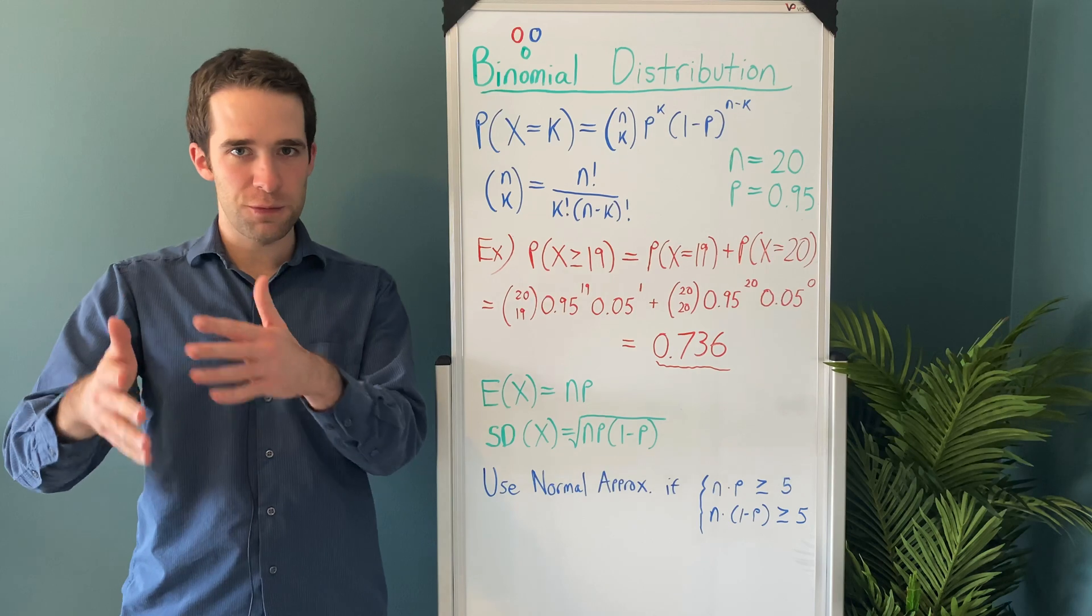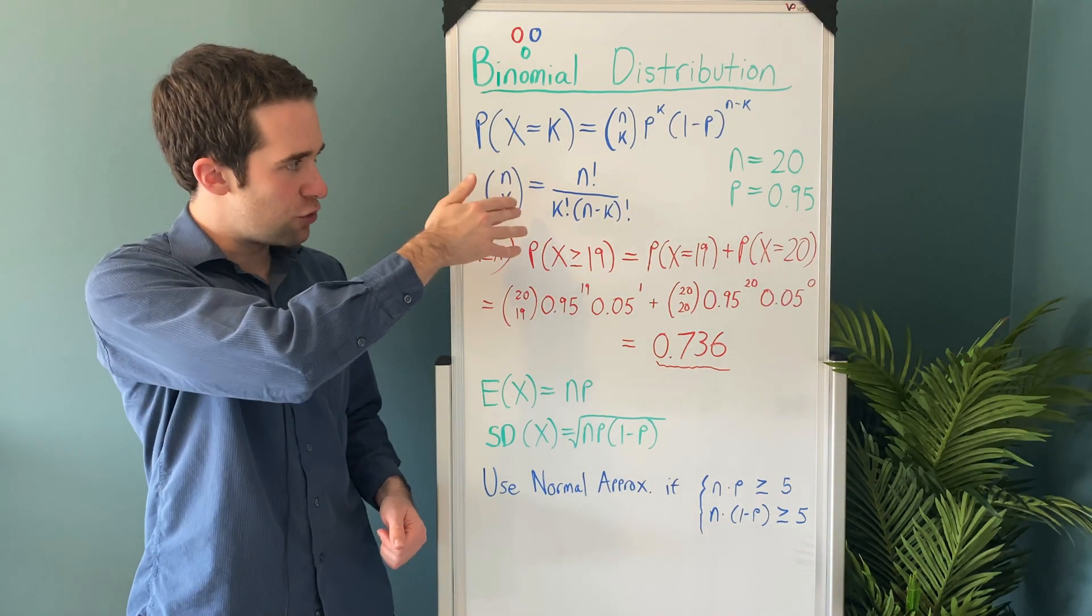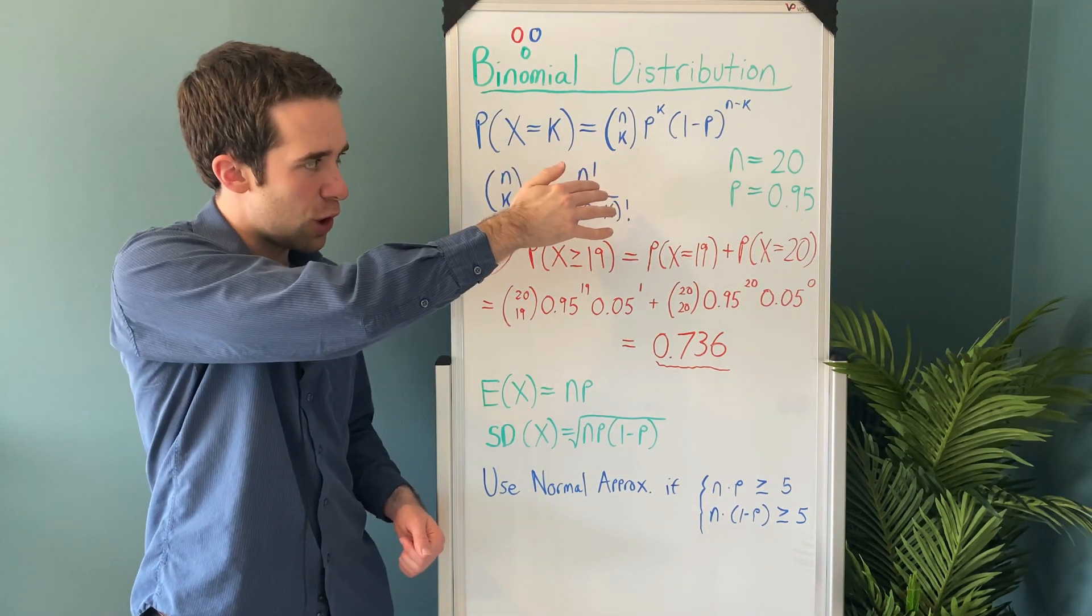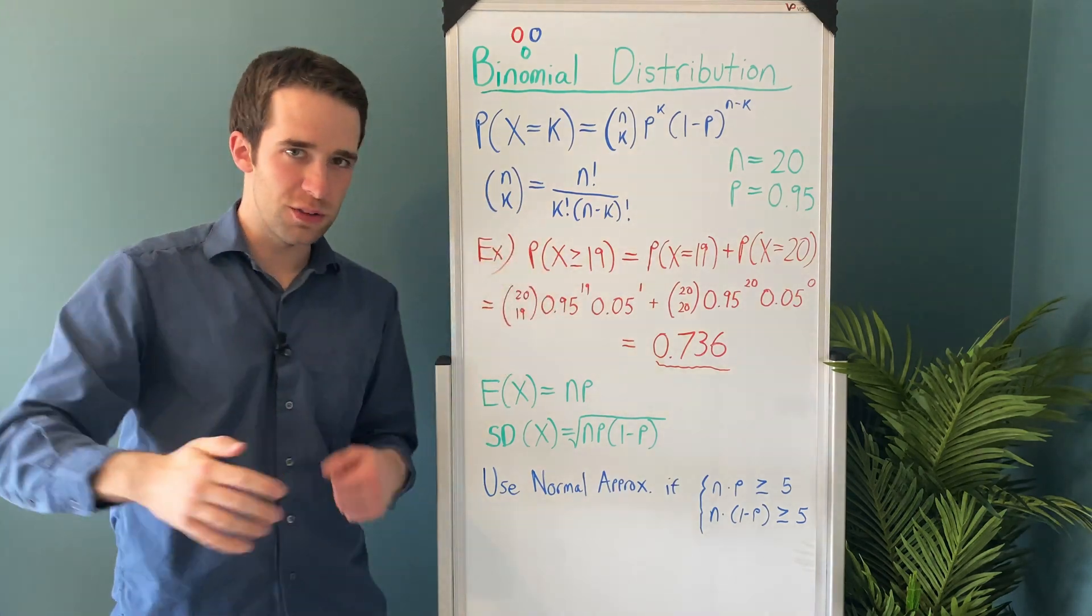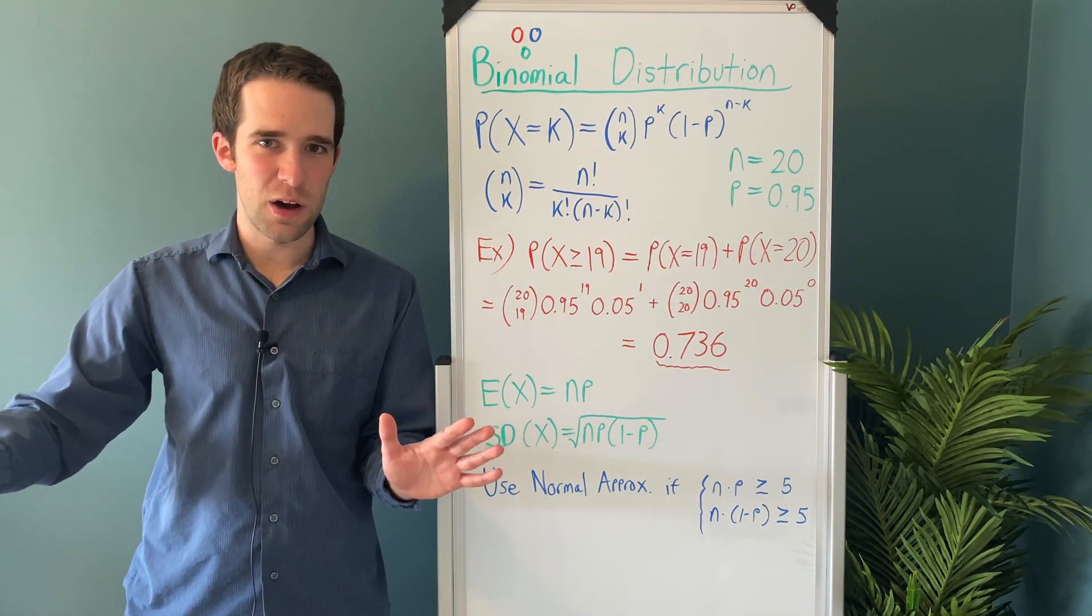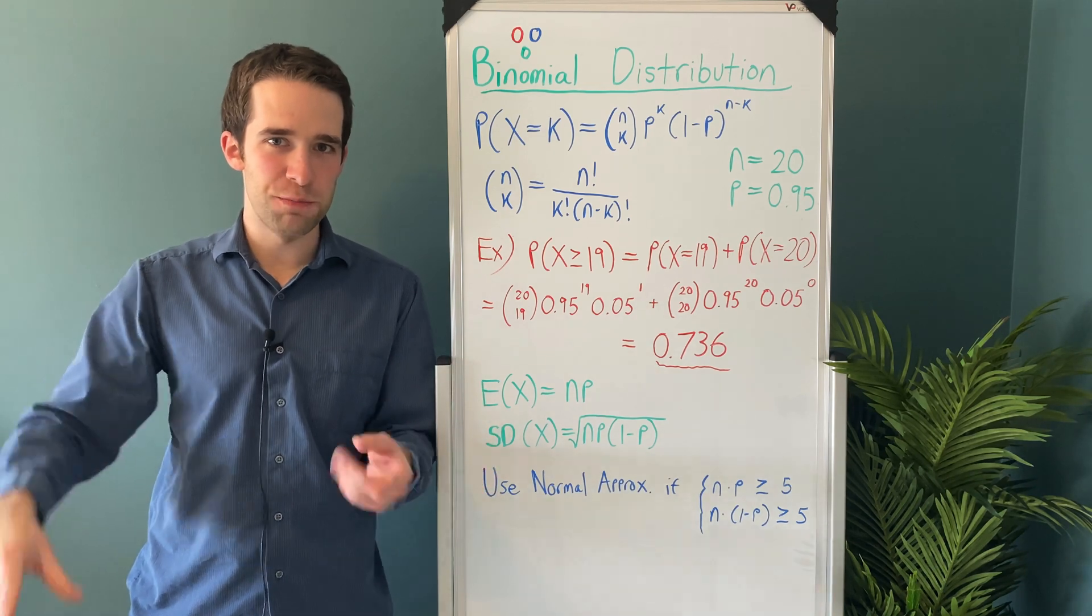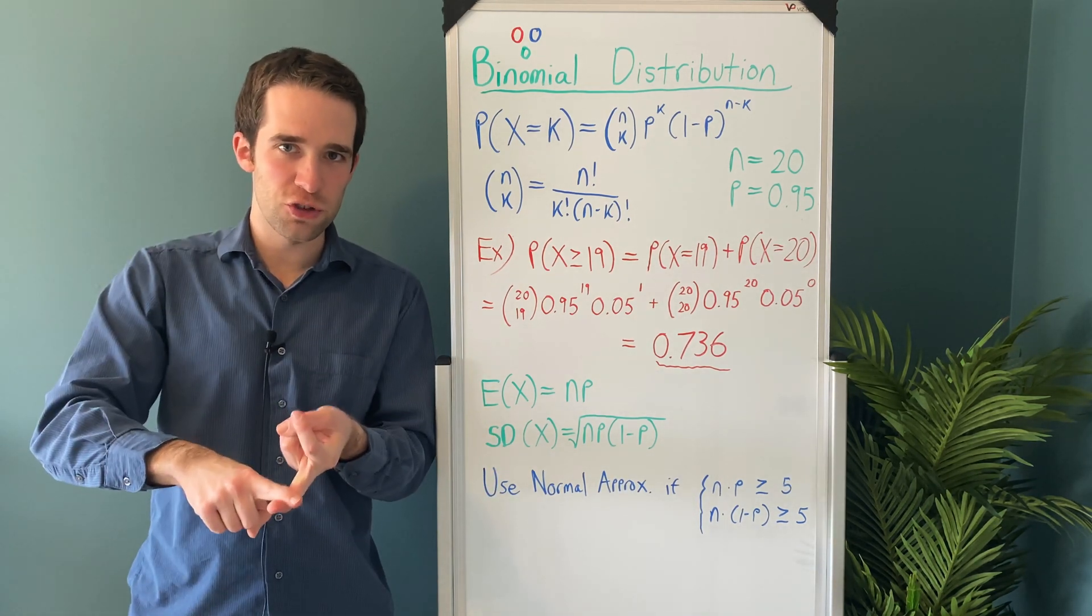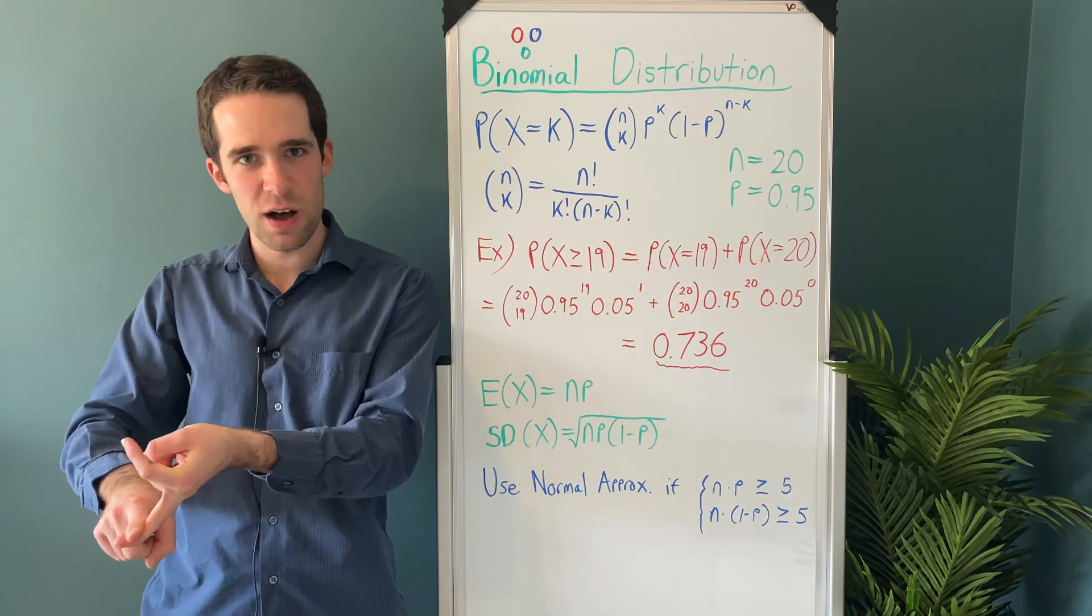The formula for the choose function is n choose k equals n factorial over k factorial times n minus k factorial, and any scientific calculator in the world is going to have both the choose function and just the factorial function if you want to calculate it by hand yourself.